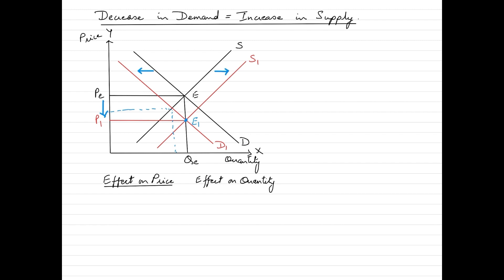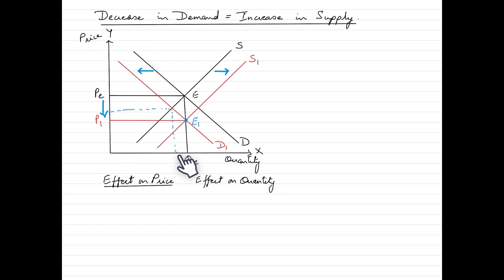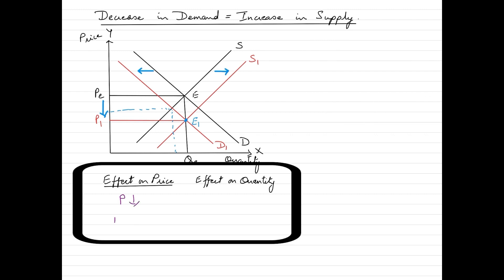When both a decrease in demand and an increase in supply happen simultaneously, their combined effects on equilibrium can be observed. We can see that the price has definitely gone down from Pe to P1. However, the quantity is more or less the same, because the decrease in demand was accompanied by an equal amount of increase in supply, so quantity remains unchanged at Qe.